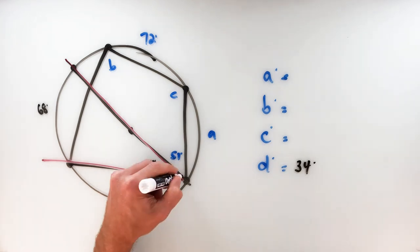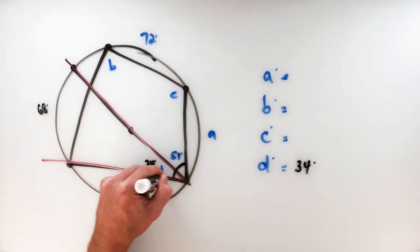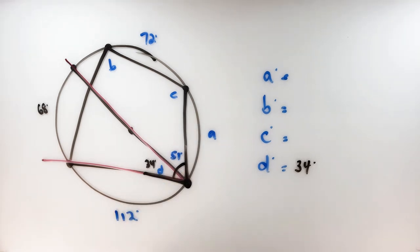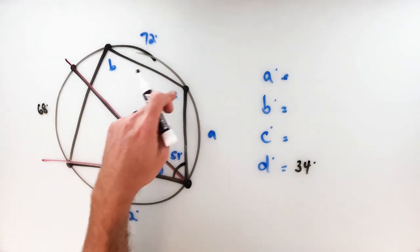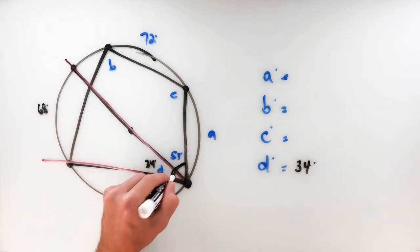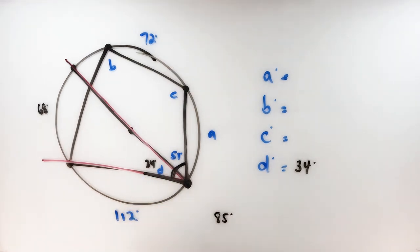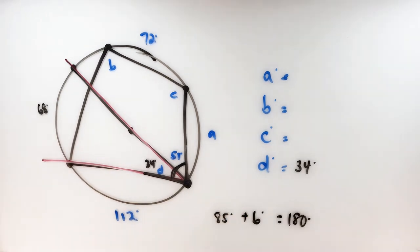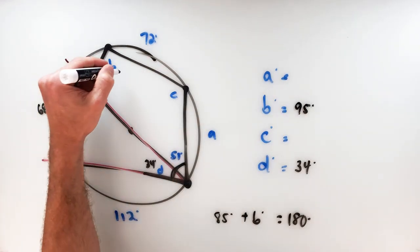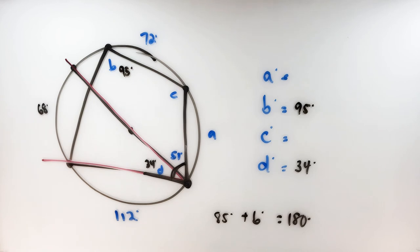Now I've got the full bottom angle of the quadrilateral: 34 plus 51 equals 85 degrees. Since opposite angles of a quadrilateral inscribed inside a circle are supplementary, angle B plus 85 must equal 180. So angle B equals 180 minus 85, which is 95 degrees.